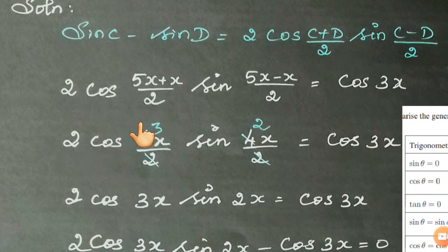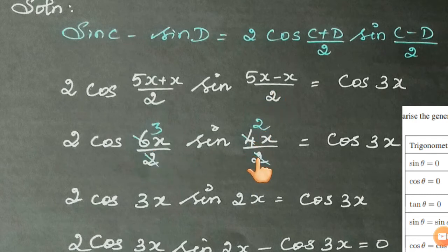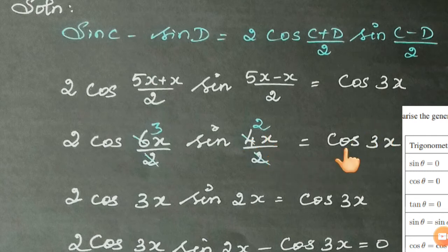Now, 2 cos(6x/2) — cancel it — gives cos 3x. And sin(4x/2) — cancel it — gives sin 2x. So we have 2 cos 3x times sin 2x is equal to cos 3x.